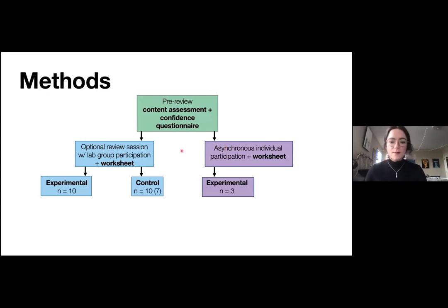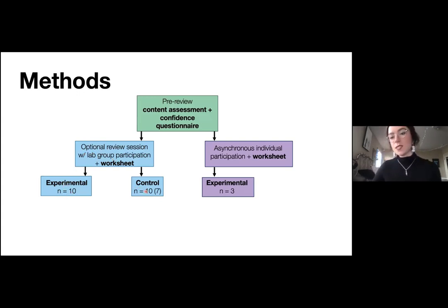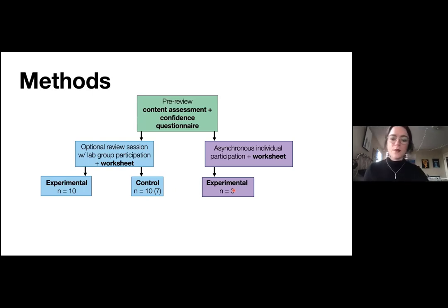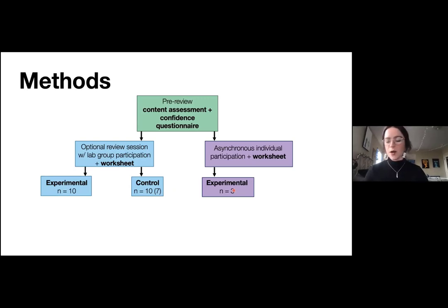The number of students that participated in the review session: for first-year students, the experimental group was 10 and the control group was 10 total, but only seven from this group filled out the appropriate online assessments. The experimental group from the second-year students had three participants. It was difficult to control experimental versus control groups with second-year students since things were distance and online due to COVID, so all second-year students were part of the experimental group and had access to the models.